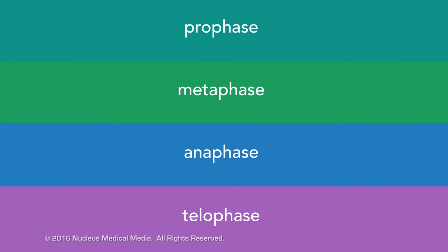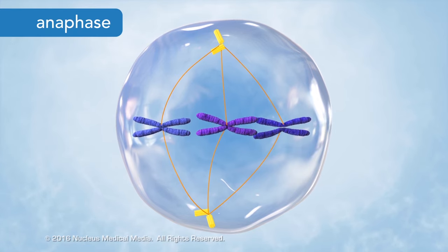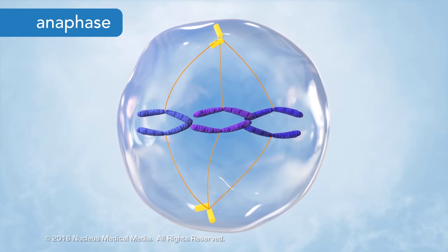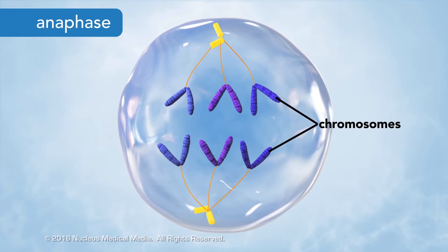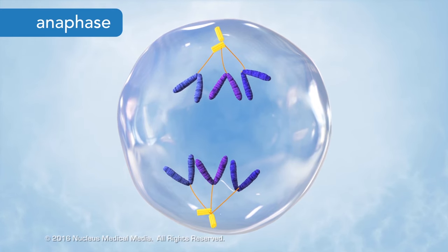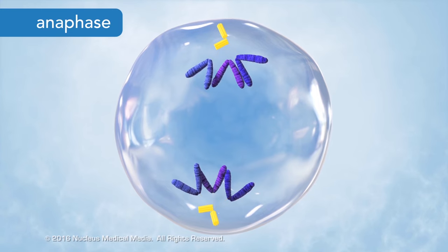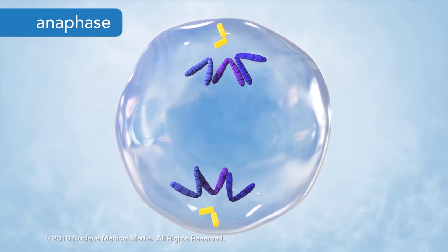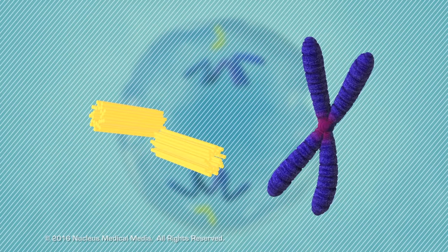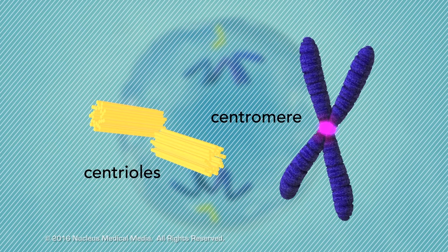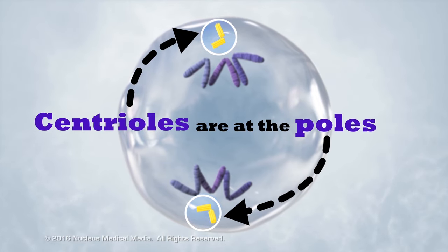Anaphase follows metaphase. During anaphase, spindle fibers separate the sister chromatids at their centromere. Once separated from each other, each chromatid is called a chromosome. The single-stranded chromosomes form a V-shape as the spindle fibers shorten and drag them through the gel-like cytoplasm. The chromosomes move to opposite poles of the cell toward their centrioles. It's common to confuse centrioles with centromeres, which connect chromatids. Remember, centrioles are at the poles.